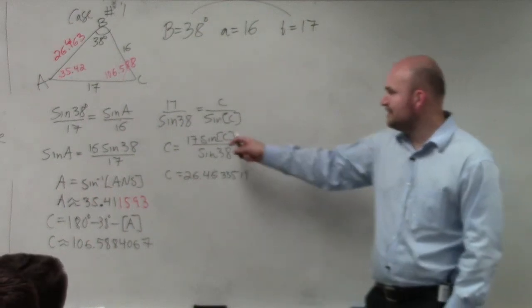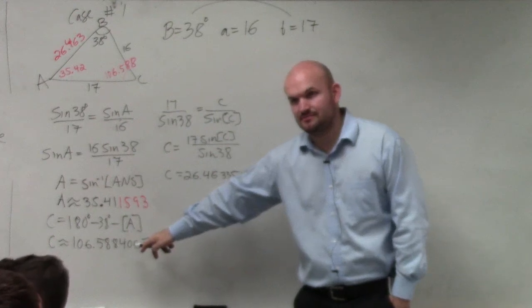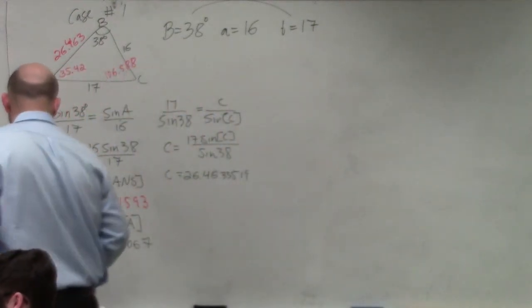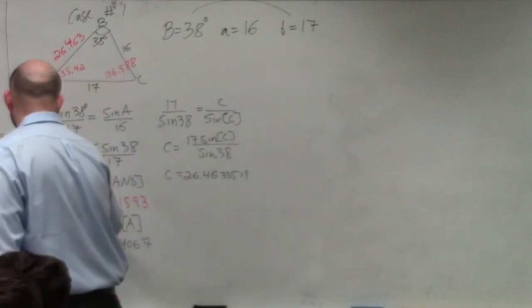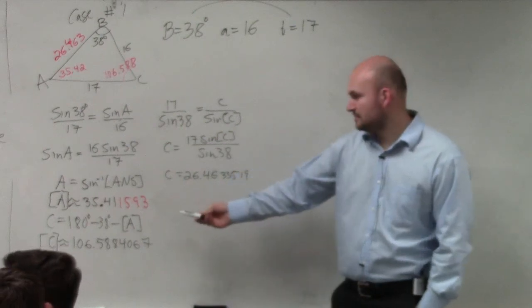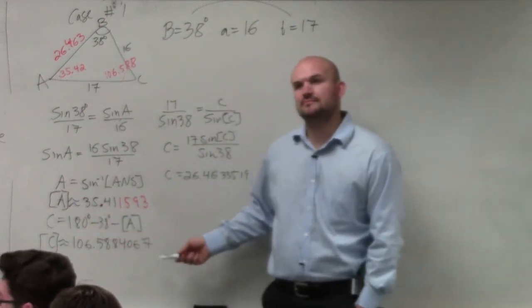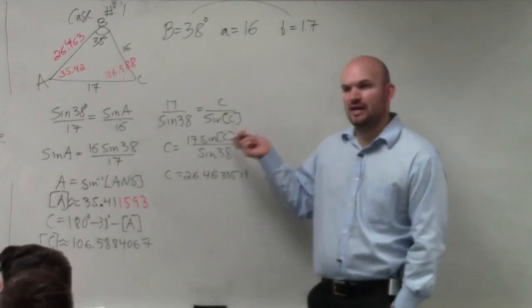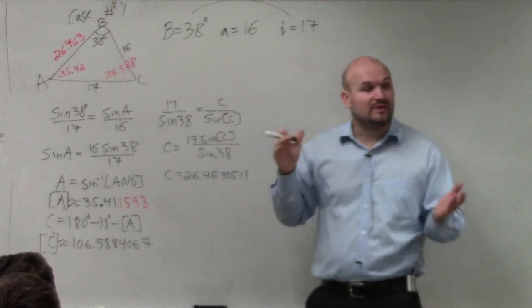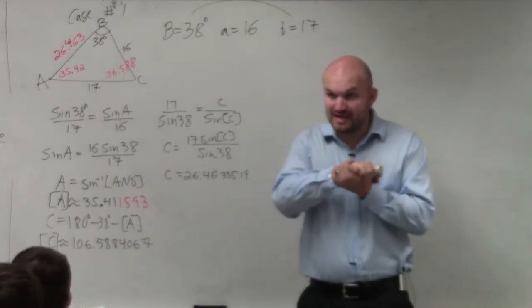Just remember, bracket C is the stored answer in your calculator — that bracket C represents 106.5884067. That's what's stored. Now we need to check for our other case. We found one triangle, but this is really important: we need to check for case two.